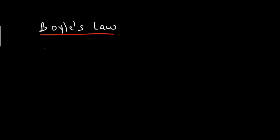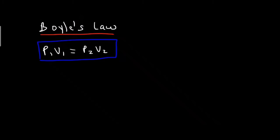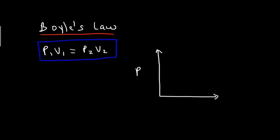The equation of Boyle's Law is P1 times V1 equals P2 times V2. This is the equation we're going to use to solve volume and pressure problems. You also need to know the shape of the graph associated with Boyle's Law, with pressure on the Y axis and volume on the X axis.